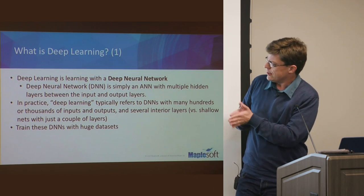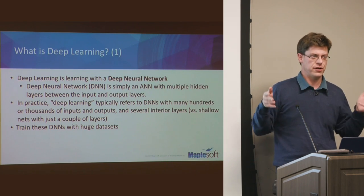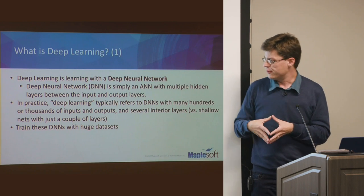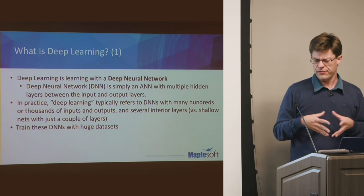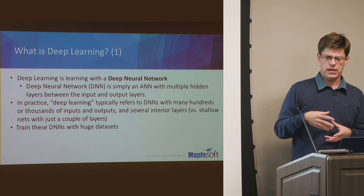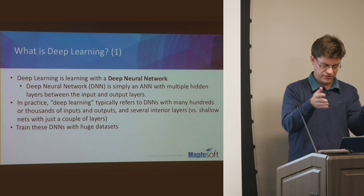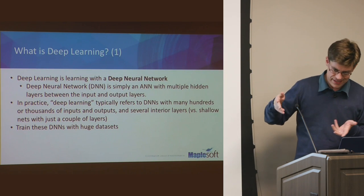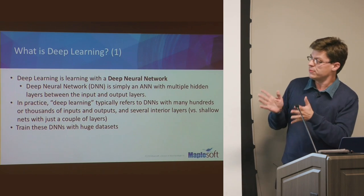So what is deep learning? Deep learning is learning with a deep neural network. Some would argue that it's not sufficient to just have a multi-layer perceptron to call it deep learning — you need more of the rich features we see now. There are special types of neural networks for particular applications: recurrent neural networks and convolutional neural networks, which are simply layers with a particular purpose and design. In the loose sense, a deep neural network is simply an artificial neural network with multiple hidden layers between the input and output layers.